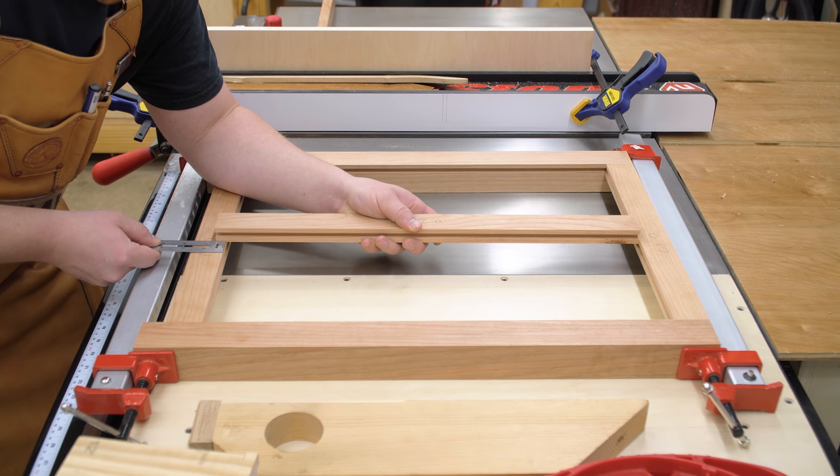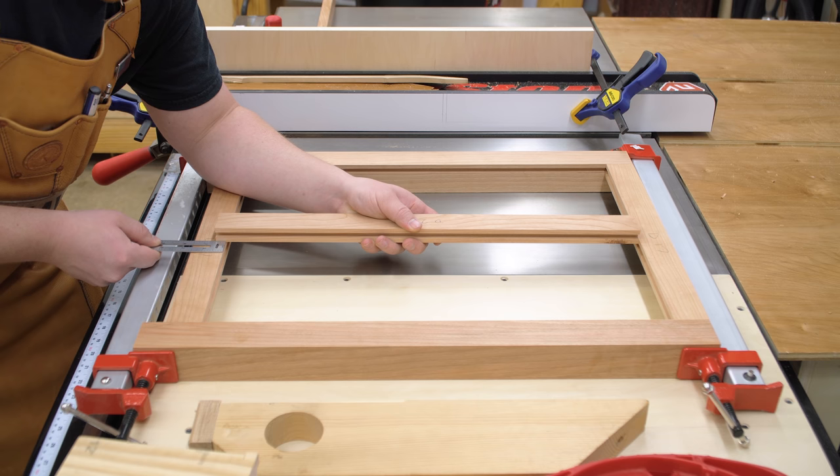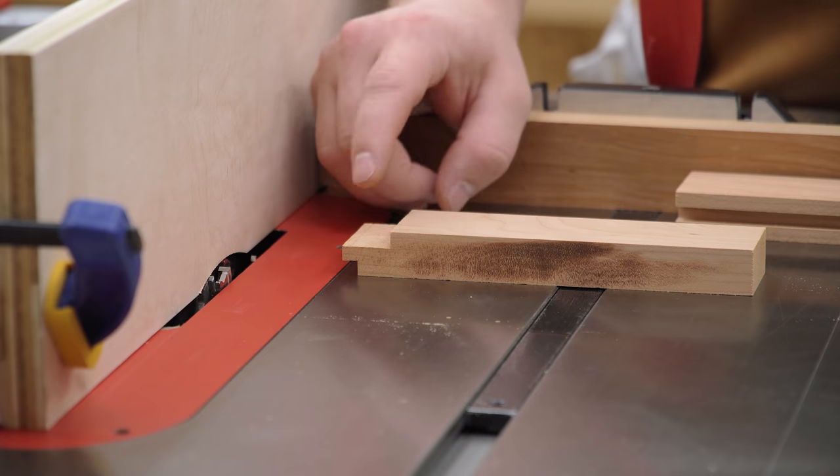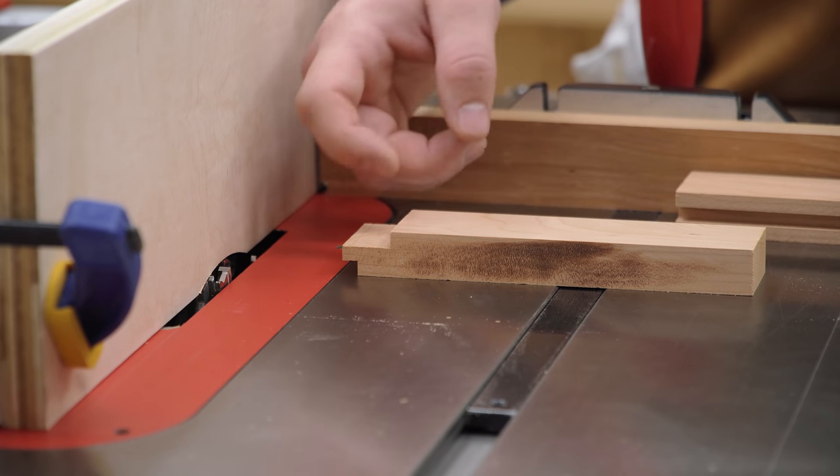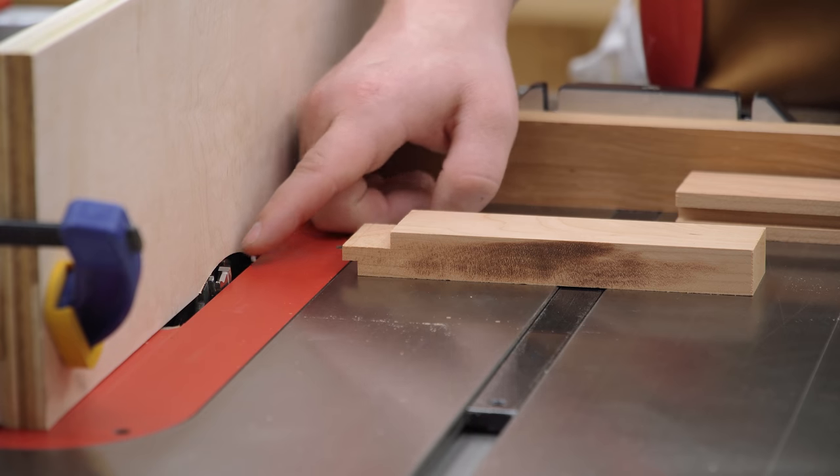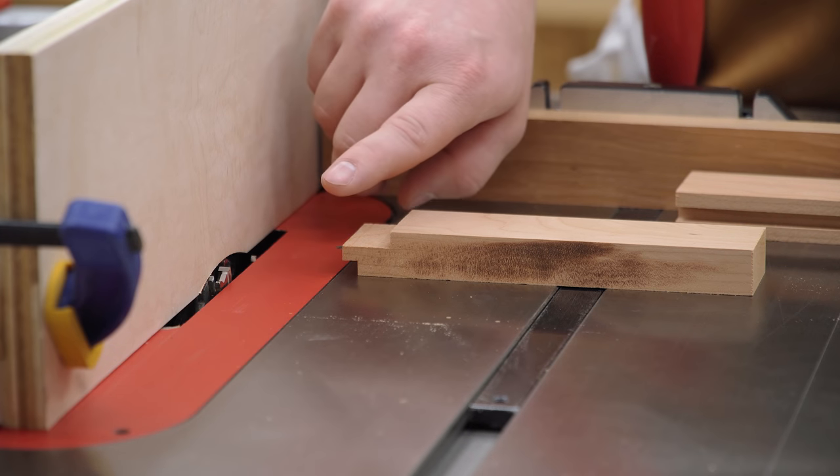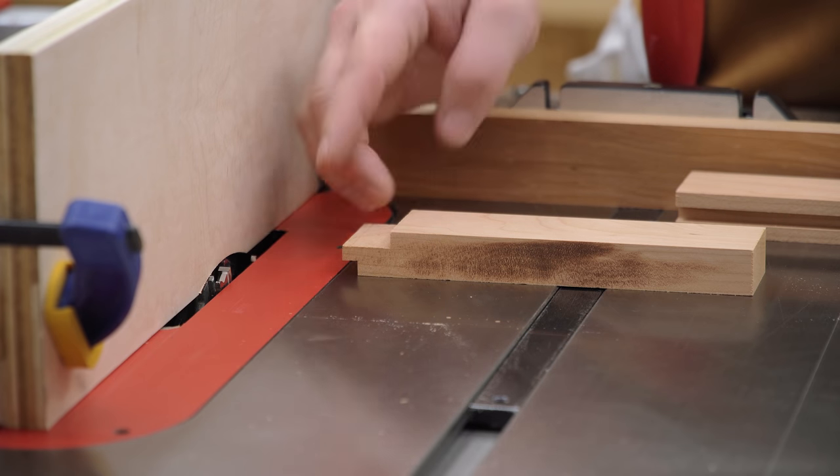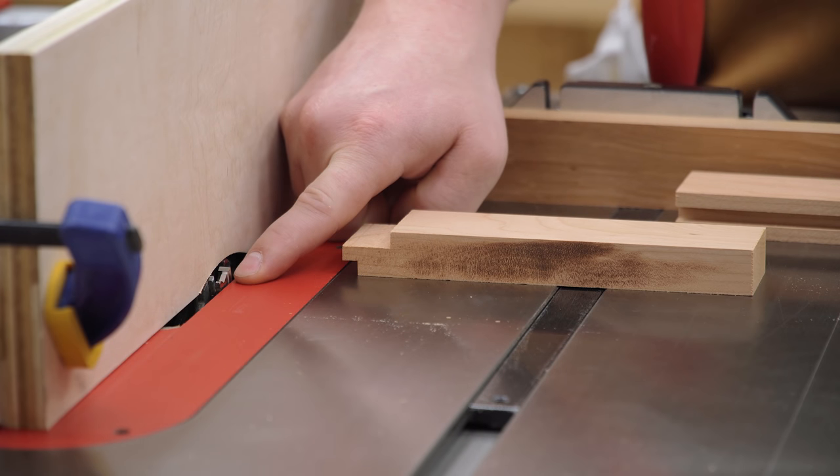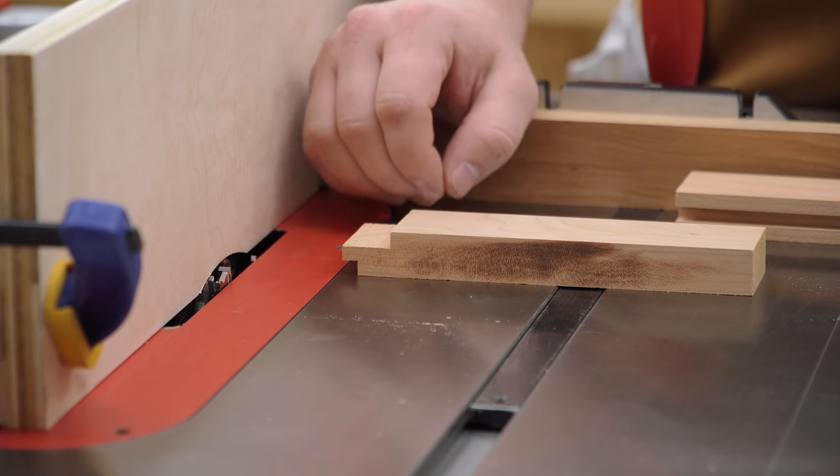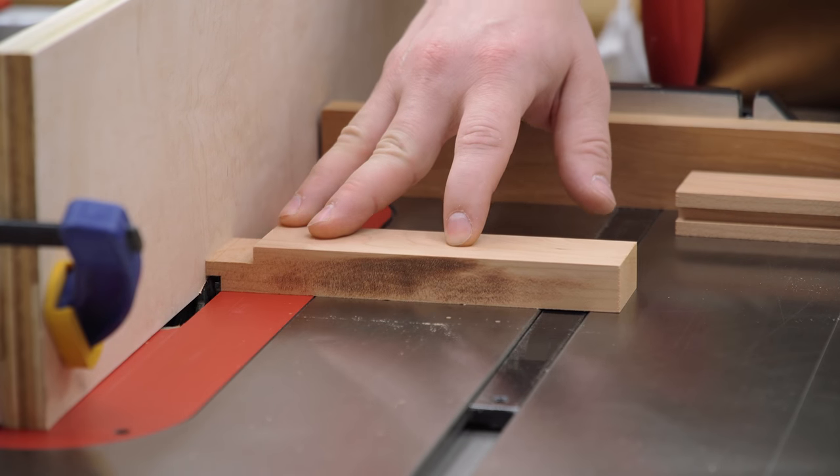Because my dado stack is set wider than the amount of material that I want to remove, it's much easier to add a sacrificial fence rather than take a bunch of pieces off. So I have a sacrificial fence clamped to my table saw fence, and I positioned it to what I think is the appropriate width of cut. I've also raised the blade to what I think is the appropriate depth, and I ran a test piece.